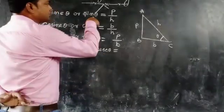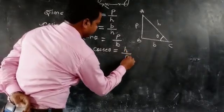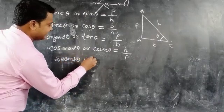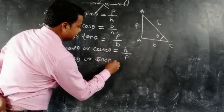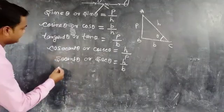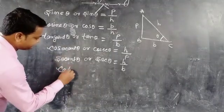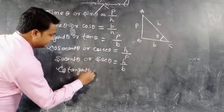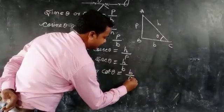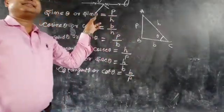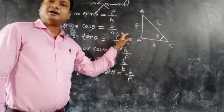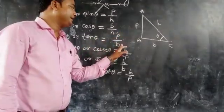The reverse of sine theta gives cosecant theta, written as cosec theta, equal to hypotenuse by perpendicular (H/P). The reverse of cosine gives secant theta, written as sec theta, equal to hypotenuse by base (H/B). And the last one is cotangent theta, written as cot theta, equal to base by perpendicular (B/P). So: sin θ = P/H, cos θ = B/H, tan θ = P/B.